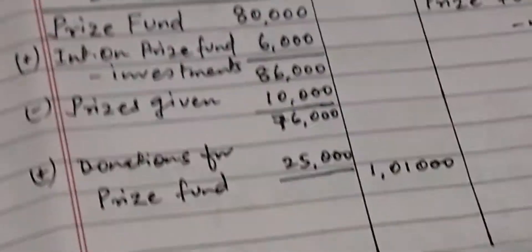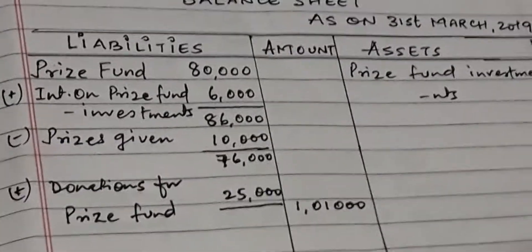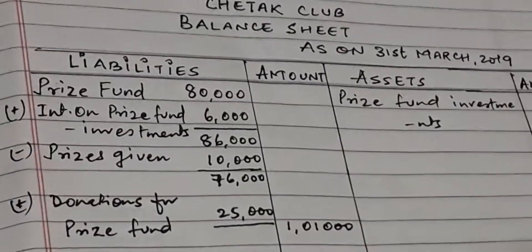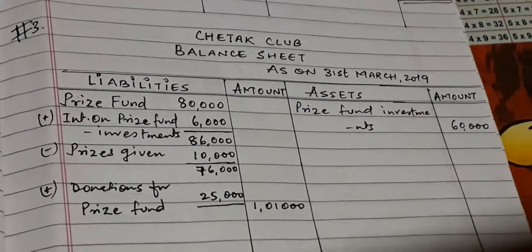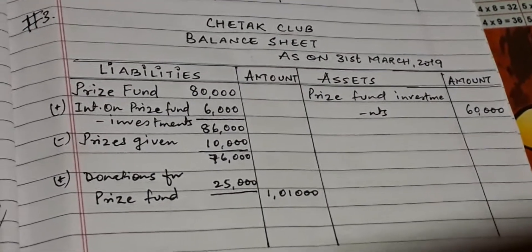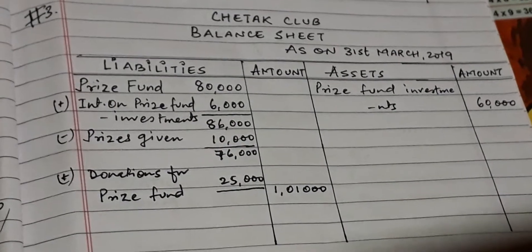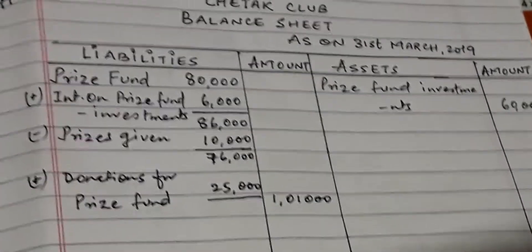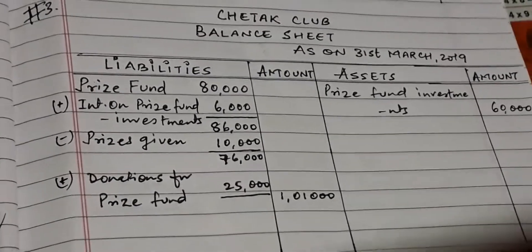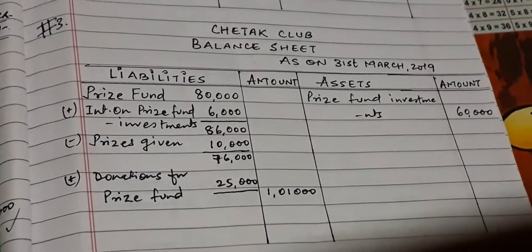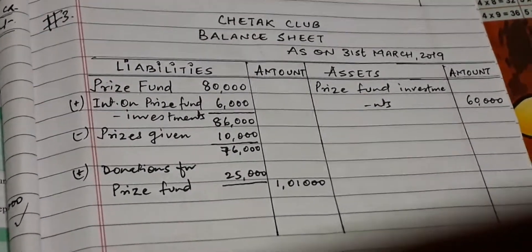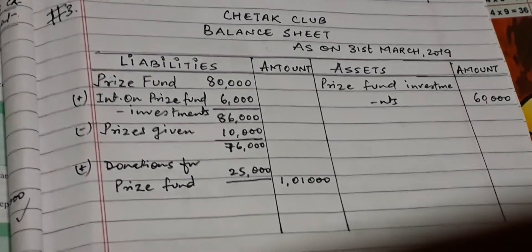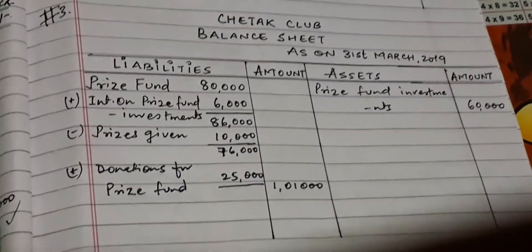First we have to prepare the balance sheet of Chetak Club. The debit side will be liability and credit side will be assets. We will see the items one by one. First we show the price fund on the liability side of the balance sheet. Interest on price fund investment is added with price fund, then prices given will be deducted.